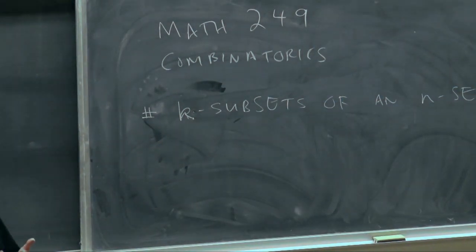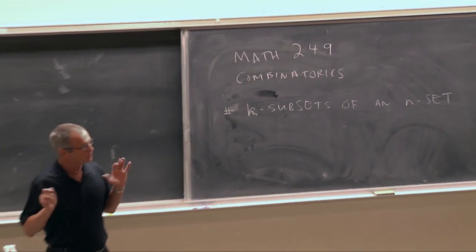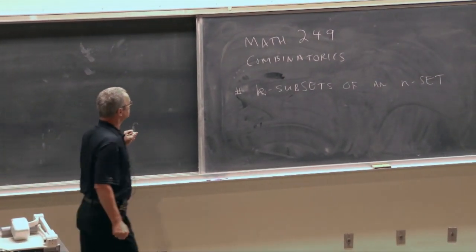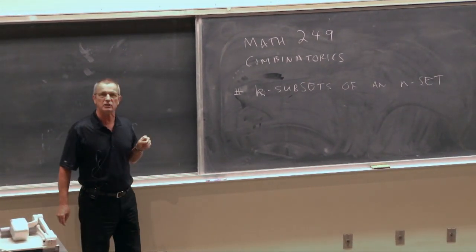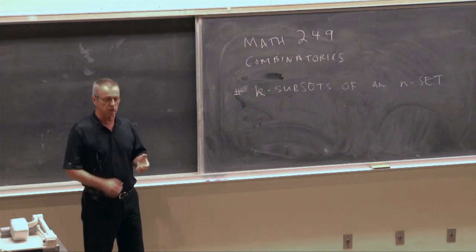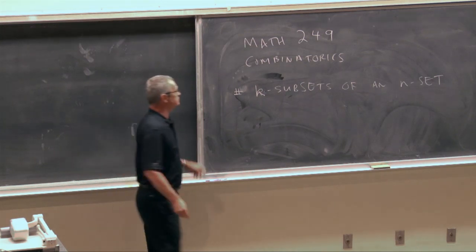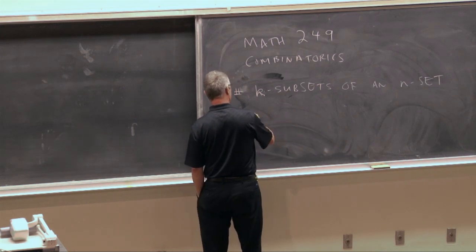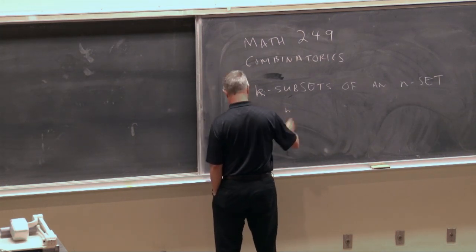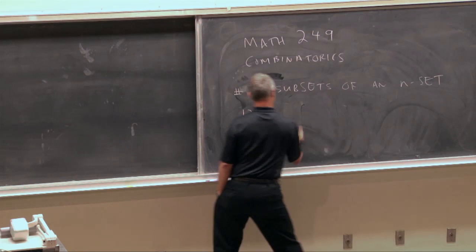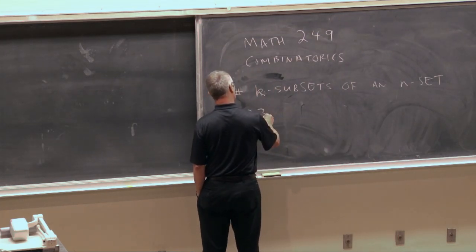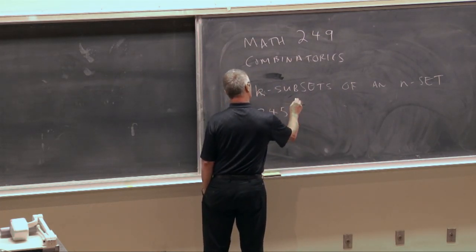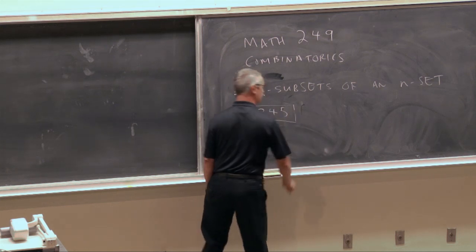So you all know the most elementary counting problem we can have, which is to determine the number of k subsets of an n set, which is to say, take your favorite set of n distinct elements. Mine happens to be the integers from 1 to n. So I'm going to take 1, 2, 3, 4, 5. It's my favorite 5 set.